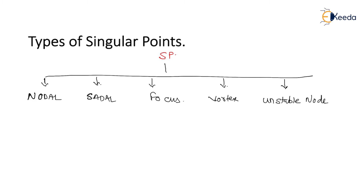Now there are a few points which should be remembered for the bifurcation of the singular points. The first is whether the given singular point is stable or unstable. The second is what is the pole location for the point to be stable. And the third is how the trajectory of the given singular point looks like.